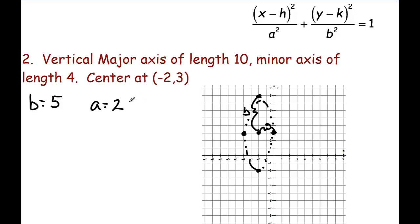So unlike the previous question, we actually don't have to do any real solving for a value. So now we can build our equation: x minus h, so that's x plus 2 squared over a squared, which is 4, plus y minus k, so y minus 3 squared, over b squared, which is 25, and that equals 1.